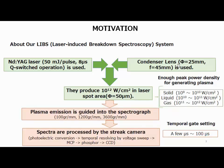The plasma emission is guided into the spectrograph. The spectrograph is a Czerny-Turner type, and the grating options are 100 and 1200 grooves per millimeter, and 3000 and 600 grooves per millimeter. The spectrograph is selectable.